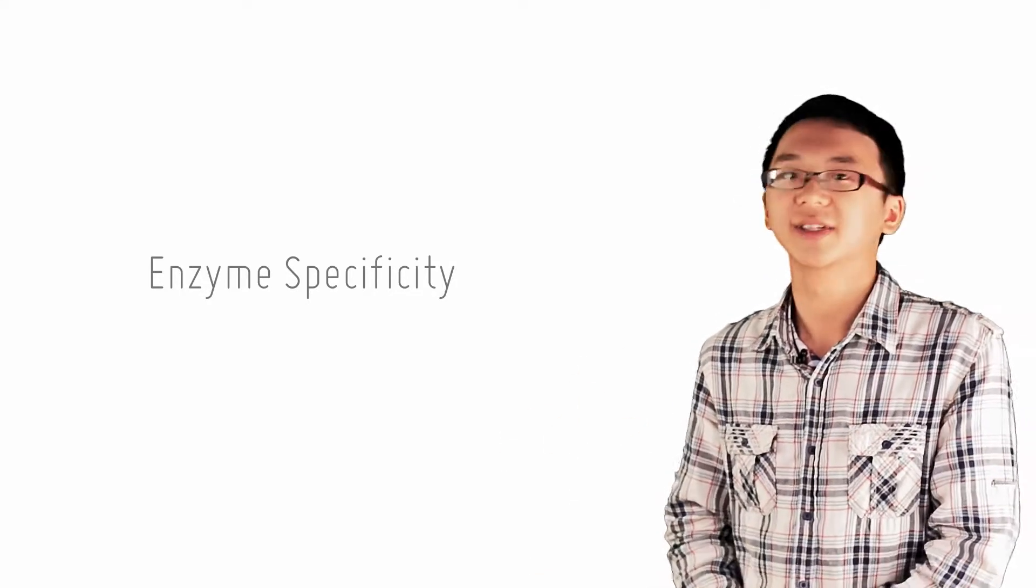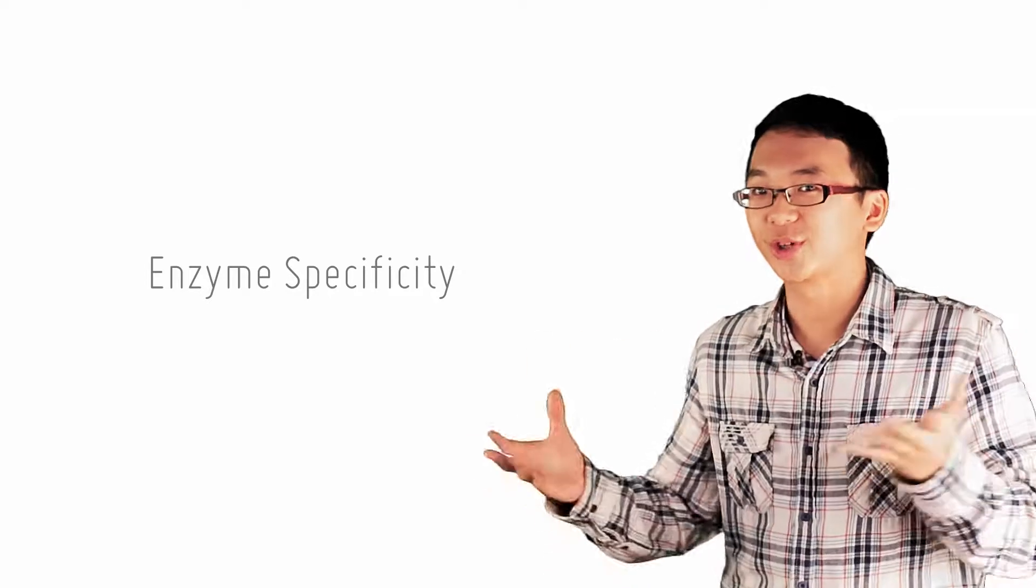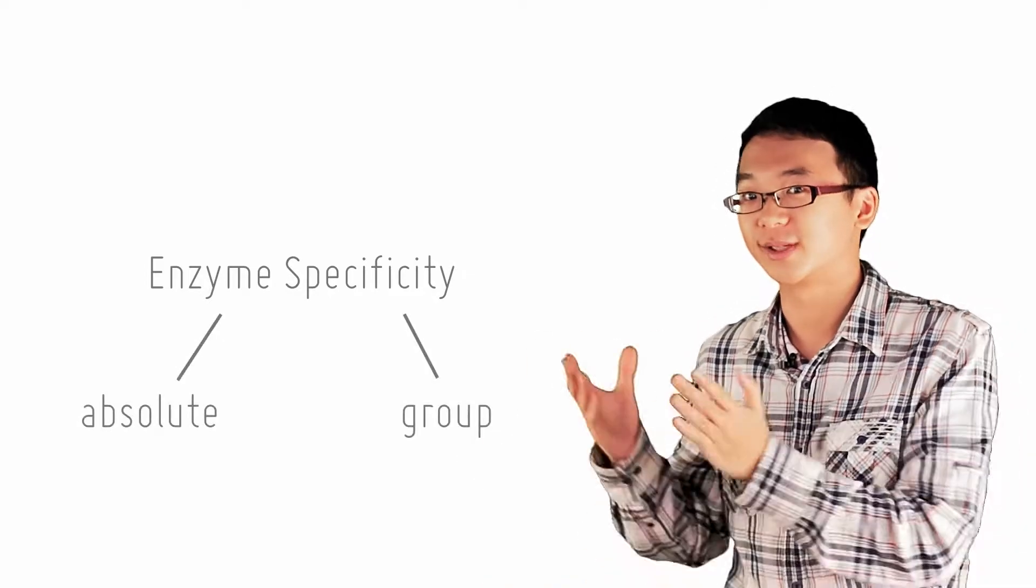Enzyme specificity can be divided into two kinds: absolute specificity and group specificity.